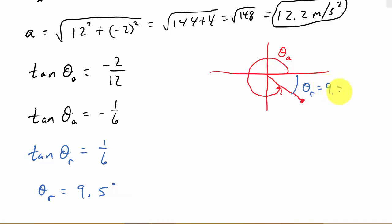We know this is 9.5 degrees. Now you can see that we can get θ_a, our angle here, would be 360—go all the way around to 360—and then subtract off the 9.5 degrees. So 360 minus 9.5 gives us a direction of 350.5 degrees.